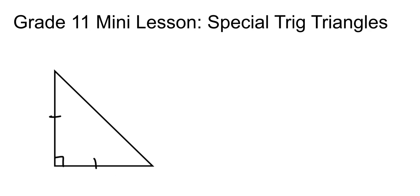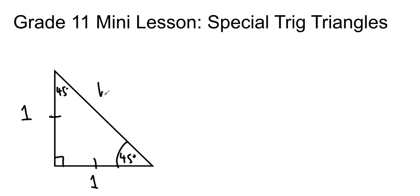We're going to start with an isosceles right triangle. We end up with angles of 45 degrees and 45 degrees, because all of the angles in a triangle add up to 180. We're going to set this side to be 1, and because these sides are equal, this one is also going to be 1. The hypotenuse is across from the 90 degrees, so it is the square root of 1 squared plus 1 squared by Pythagorean theorem, so it is root 2.